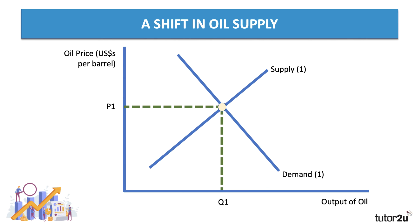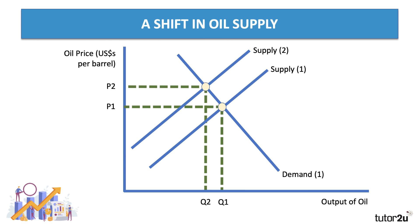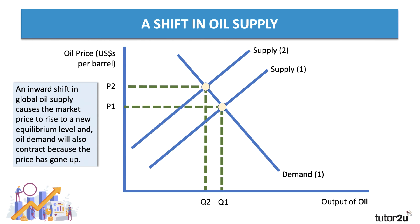What about a shift in supply? There were some supply factors we mentioned. Here's an example of a fall in supply — perhaps OPEC, where OPEC limited production of oil. They limit production for a reason: they know that if they can restrict supply to S2 for a given level of demand shown by D1, that's going to drive the price higher from P1 to P2. An inward shift of global oil supply will cause the market price to rise. Oil demand will contract — we move up the demand curve — because oil has become more expensive.